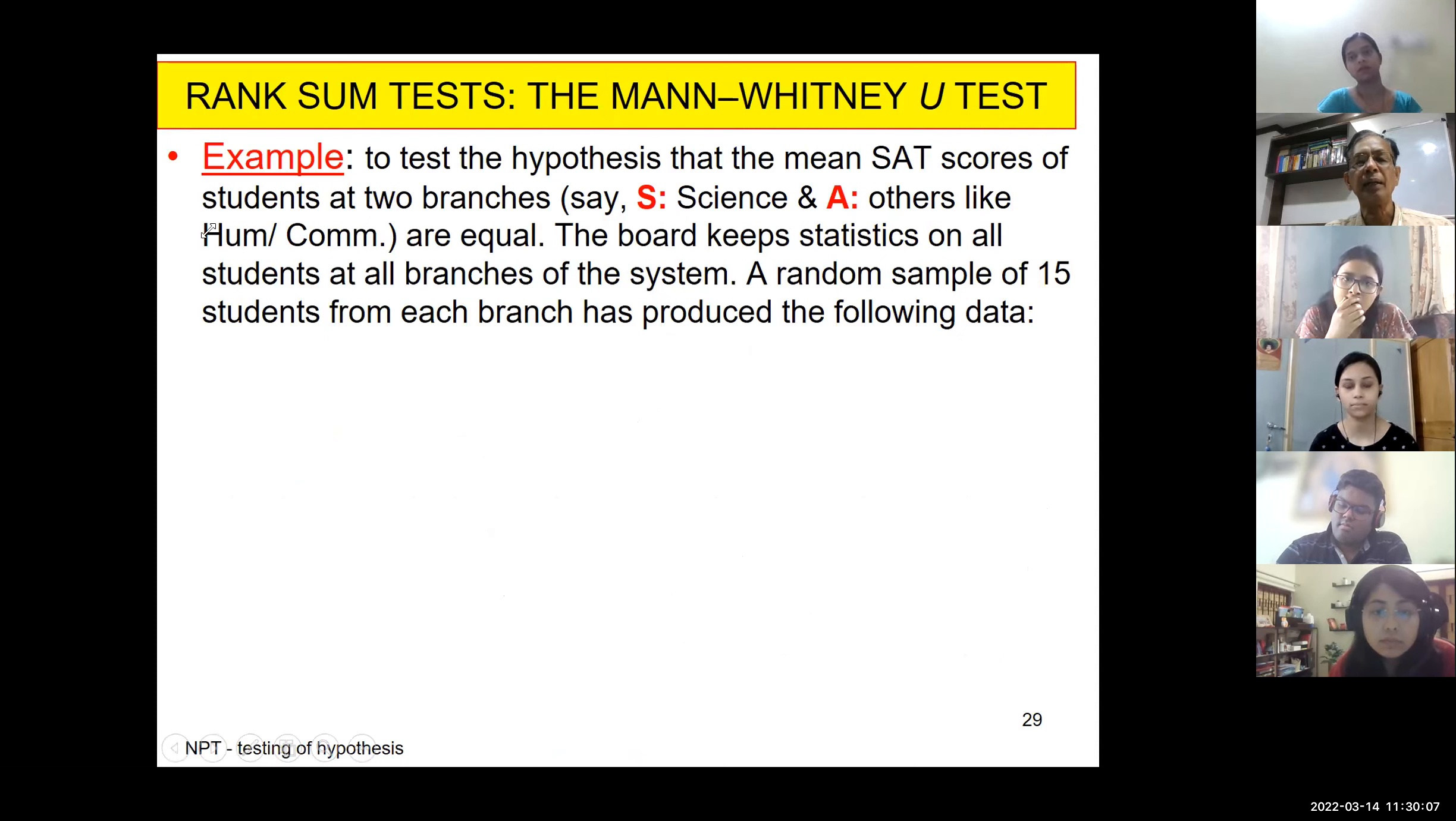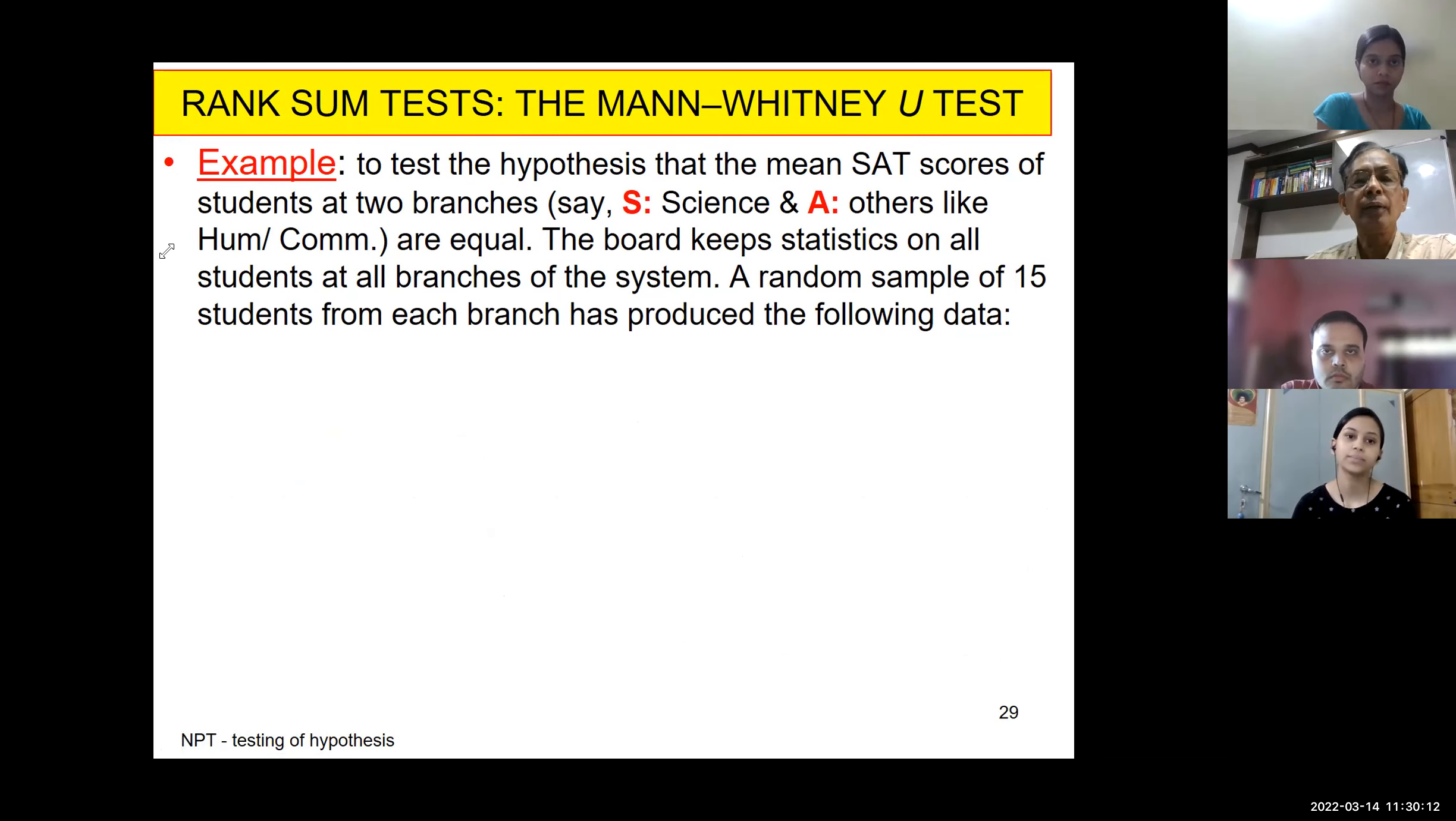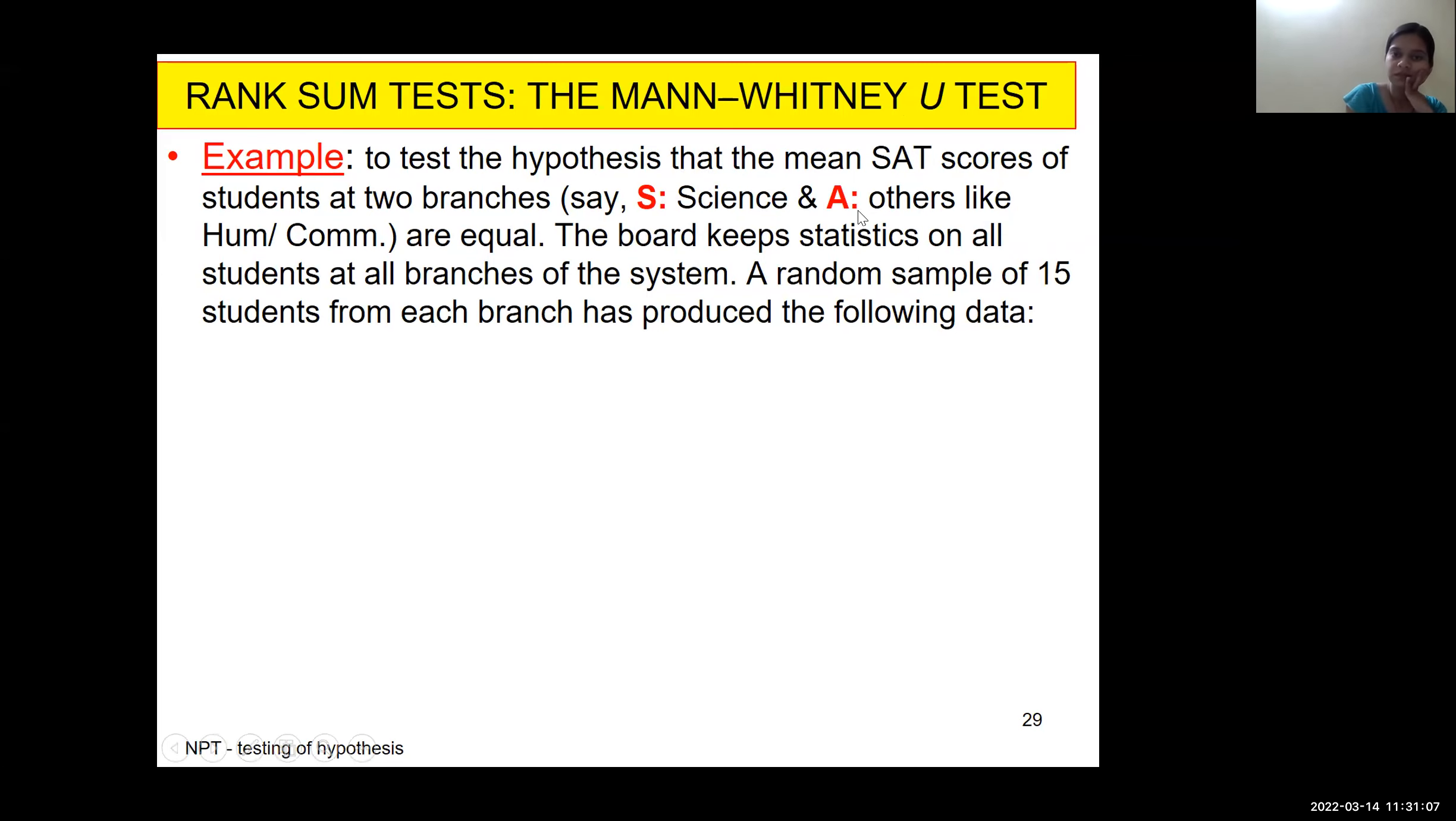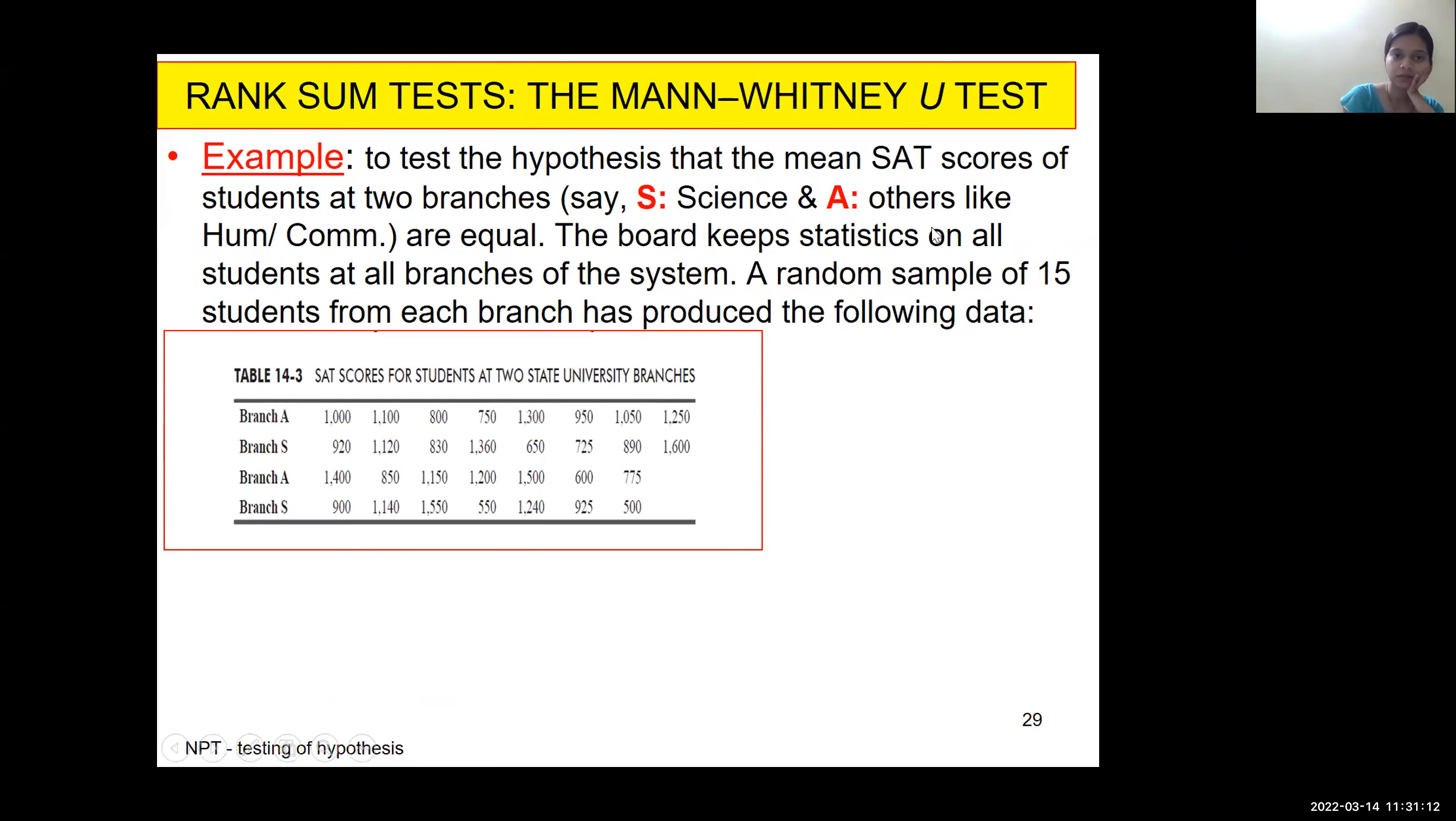Say, for example, we'll be comparing some admission test, maybe SAT or CAT, where students from different backgrounds appear. Suppose we wanted to know the type of persons who come in CAT. Is it favoring science engineering background student or favoring more to commerce, or almost similar? From CAT score, we'll check the background of the student. How many of the science engineering students got higher scores? How many of the other backgrounds got higher scores? So, let us denote S for science and engineering background, A for others like humanities and commerce. Say, this is the data.